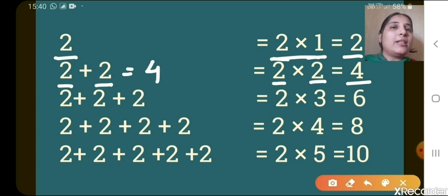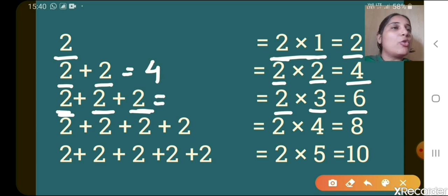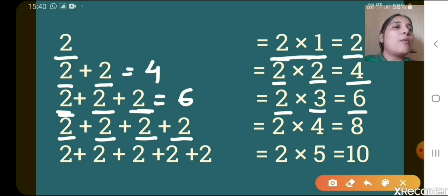Now in the next, there you can see 2 is added how many times — 1, 2, 3 — 2 three times. What you will get? 2 threes are 6. Or you add 2 three times: 2 plus 2 is 4, 4 plus 2 is 6, isn't it? Now 2 plus 2 plus 2 plus 2 — 2 is added 4 times — so 2 fours are 8.